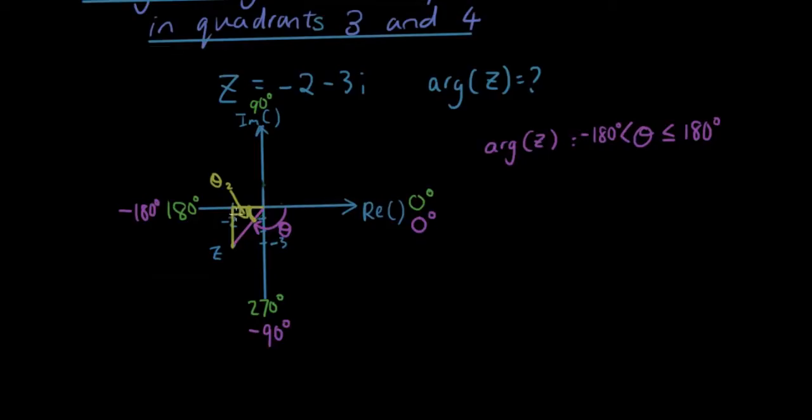If we find theta2 using trigonometry, then we can just go negative 180 plus theta2, and that will give us what theta is. So rather than talking about it, I'm just going to show you. So the opposite side, this side here, is equal to 3, and the adjacent side here is equal to 2.